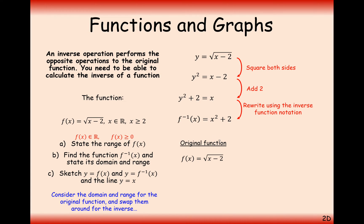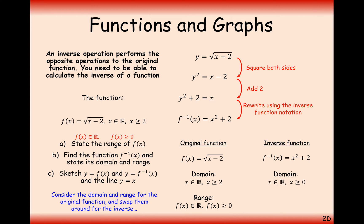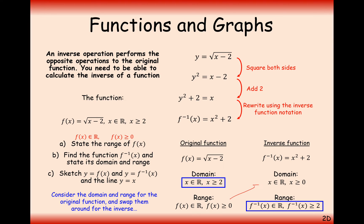Let's think about the domains and ranges. The original function f of x had a domain of x greater than or equal to 2 and a range of f of x greater than or equal to 0. For the inverse function, the range has to be greater than or equal to 2 — because x squared is always positive, so we can't get anything lower than 2. The domain of the inverse is x greater than or equal to 0, since we want it to be a one-to-one function. These domains and ranges swap around — and that always happens for an original function and its inverse.